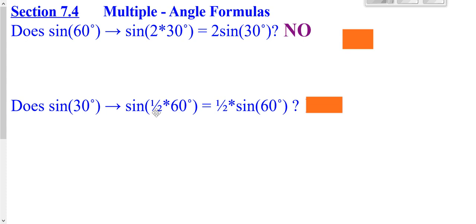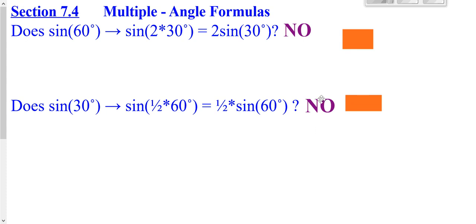Similarly, with 1 half — if I had the sine of 1 half times 60, I cannot pull the 1 half in front. The sine of 60 is root 3 over 2, and times that 1 half would be root 3 over 4, which is totally different than the sine of 30, which is 1 half. So that does not work. If you have an angle that you're multiplying by after your trig function, you cannot just pull it in front.